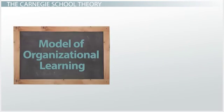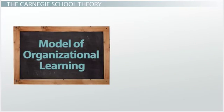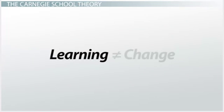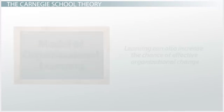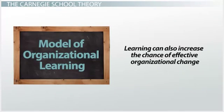Model of organizational learning. The Carnegie School also proposed a model for a learning organization. You should first note that learning is a different concept from change. You can learn without changing and change without learning. However, change, including failure-induced change, can influence learning. Learning can also increase the chance of effective organizational change.